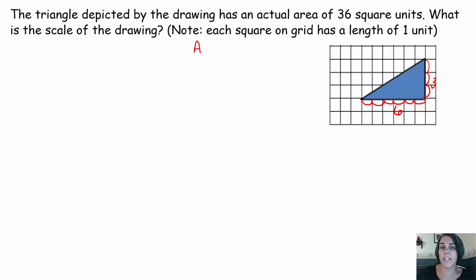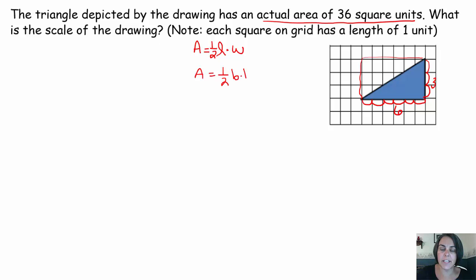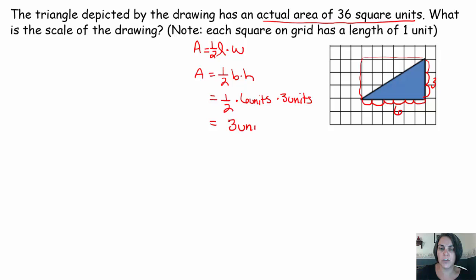I'll start with the scale drawing area since I'm given the actual area. The area of a triangle is one half times base times height — because a triangle is half a rectangle. So that's one half times six units times three units. Half of six is three, and three times three is nine, giving nine square units for the scale drawing area.